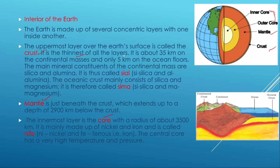The crust covers the continental masses. The continental crust is about 35 km thick, while the oceanic crust is about 5 km thick. So the upper layer includes both oceanic and continental crust.